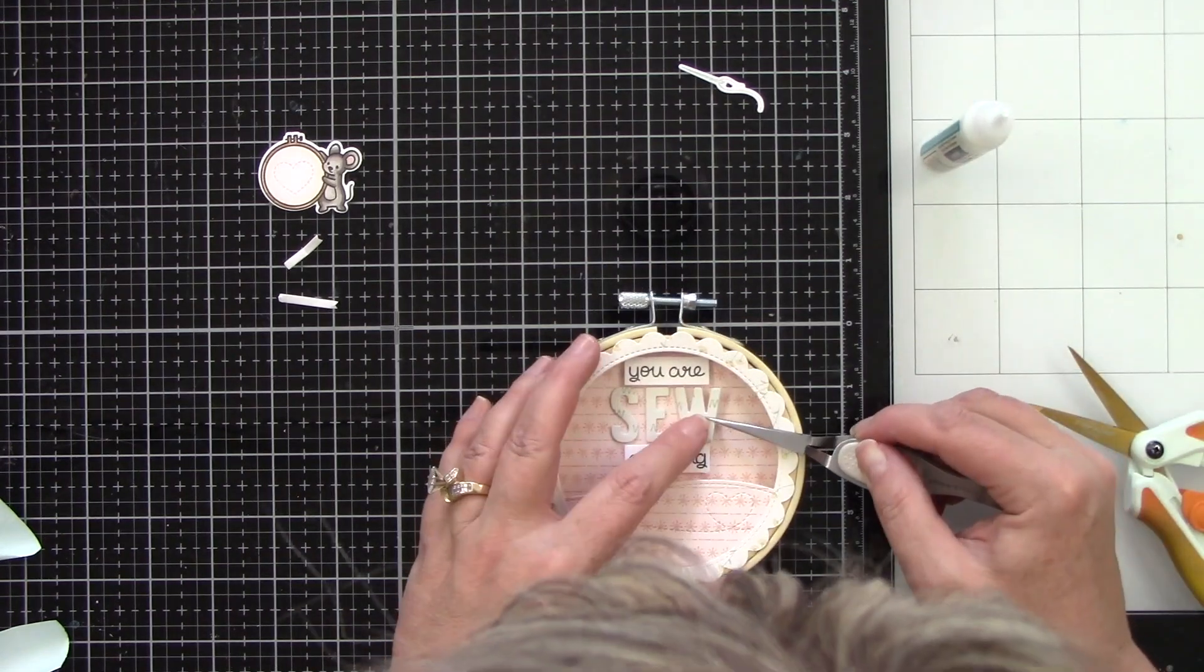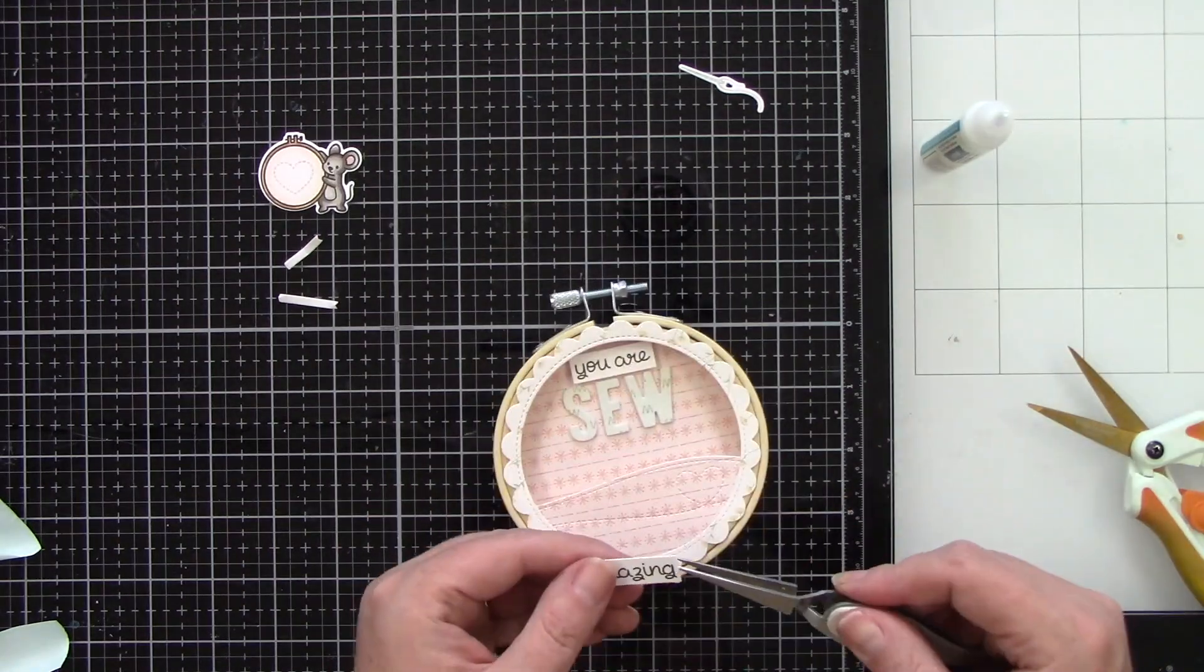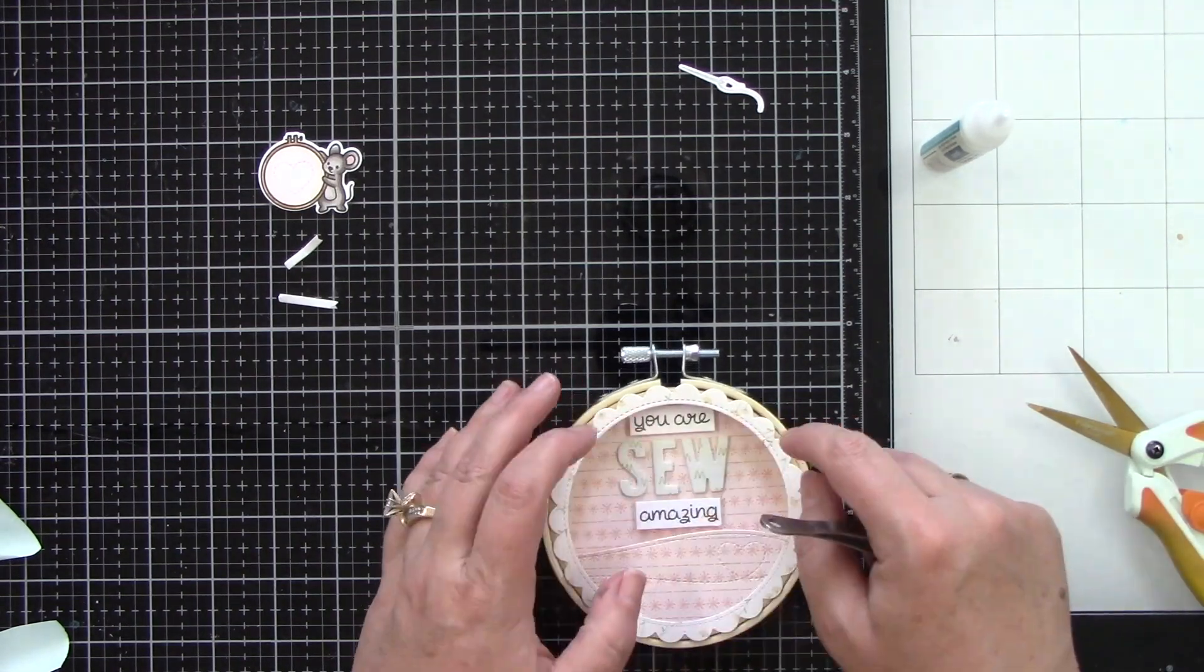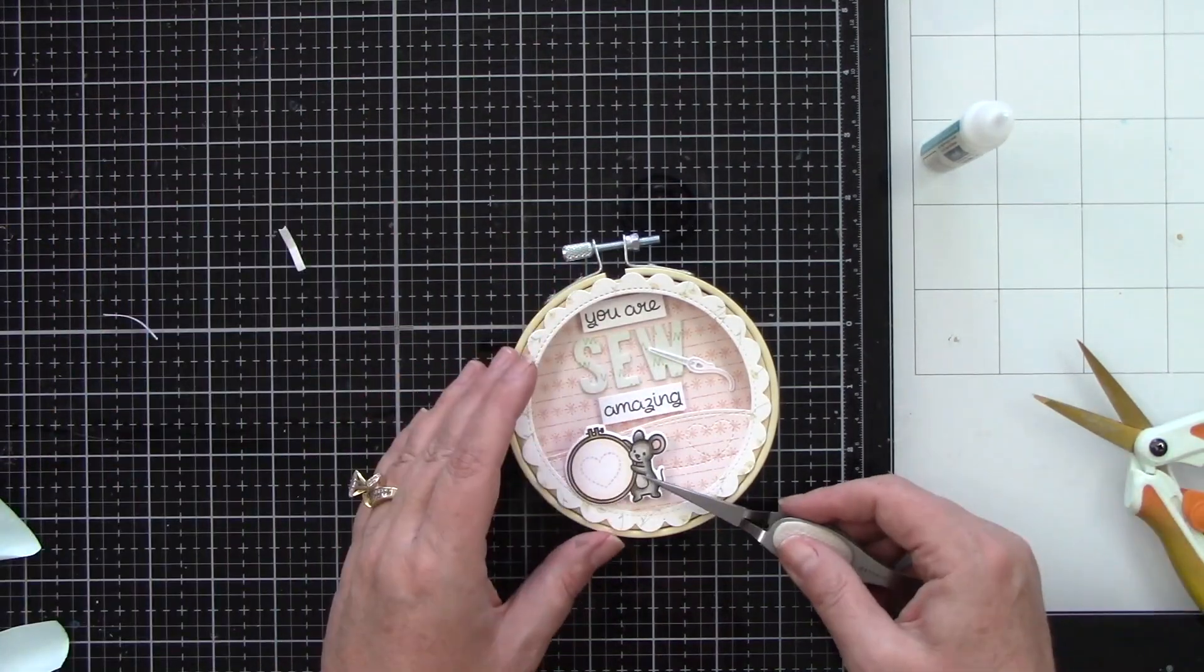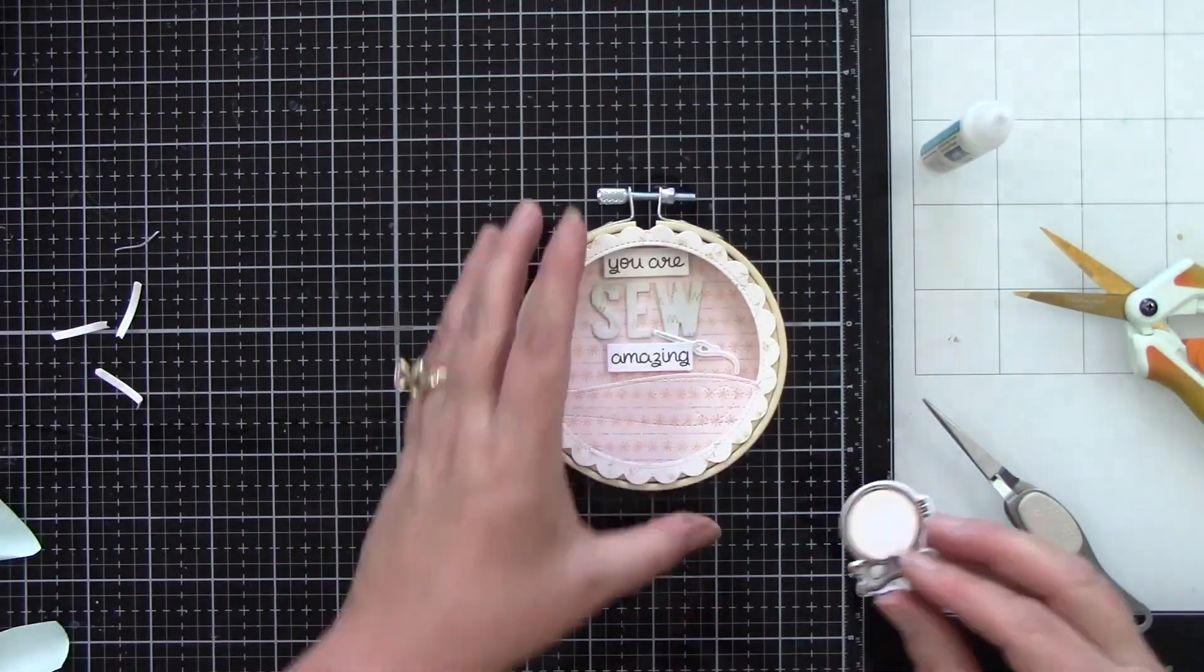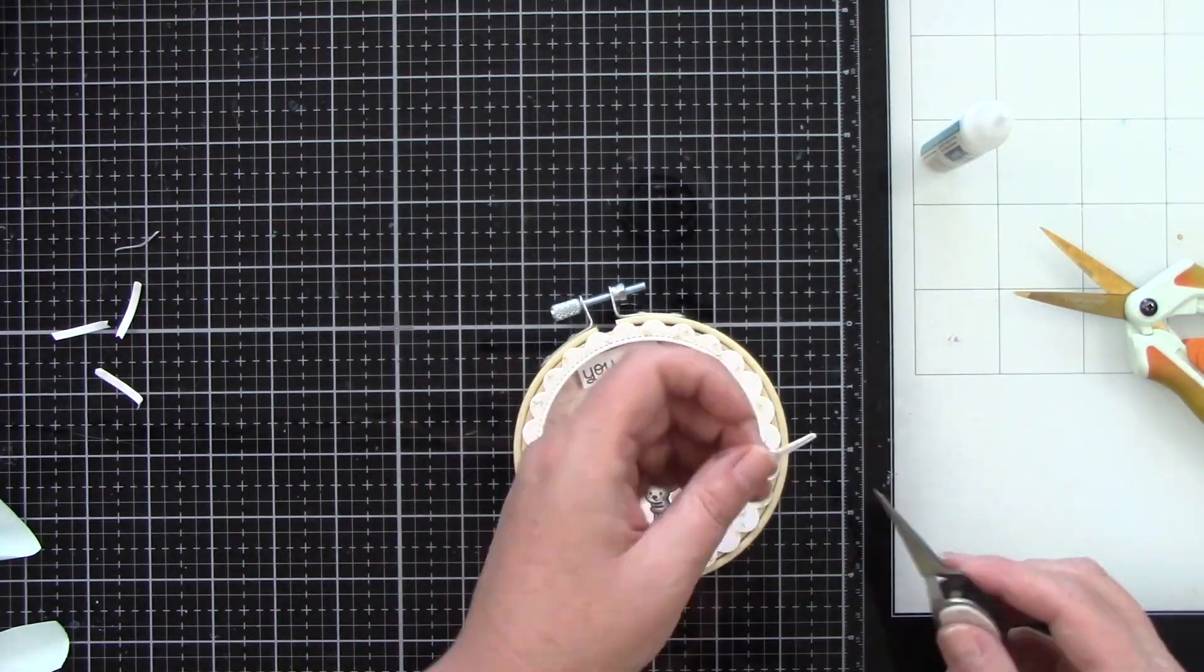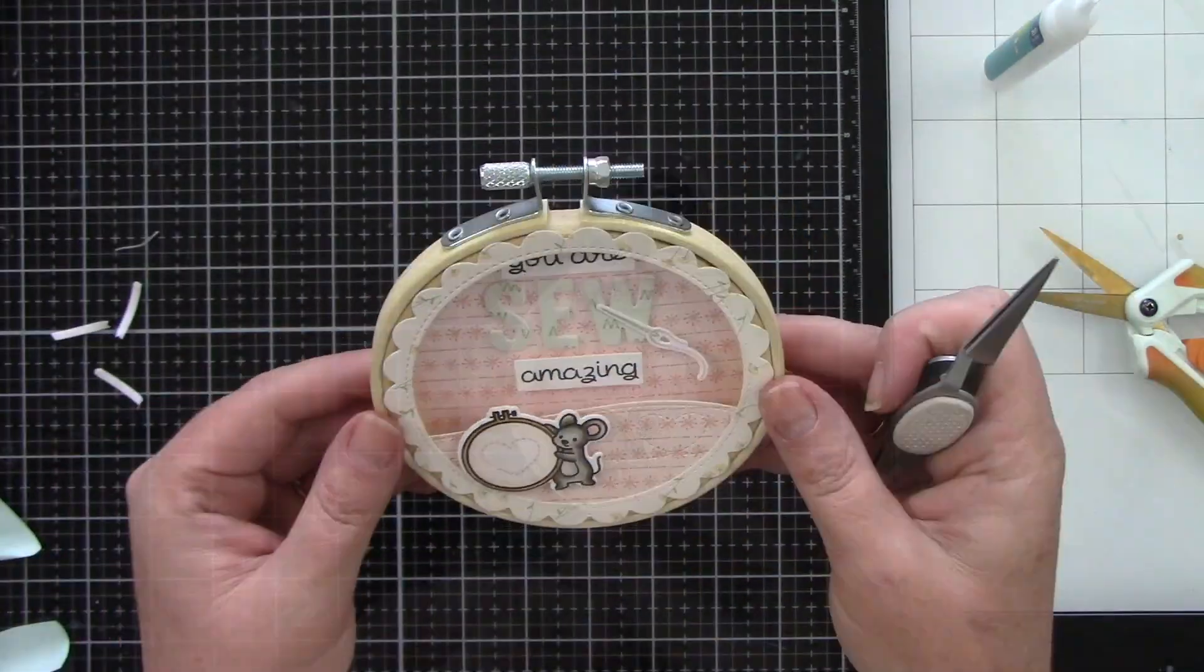Using reverse tweezers and a liquid glue is super helpful to get your fingers in here. I did decide to move down the word amazing and move the you are up just a little bit so it can have a better spacing in between. I'm also going to add foam tape behind this cute mouse with the embroidery hoop. He's going to go on the front next to that stitched heart. And then that little sewing needle I thought would be really cute on the background. Just a little something extra.